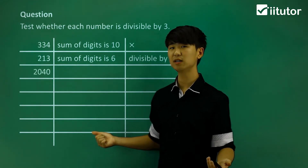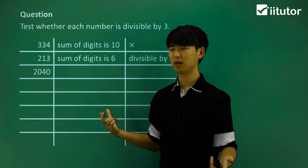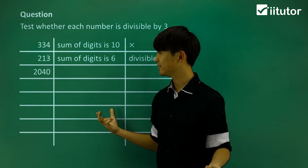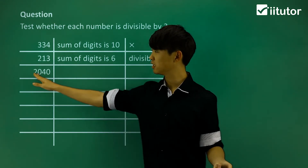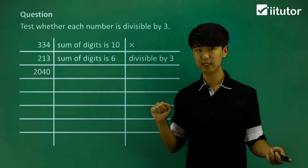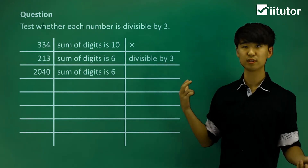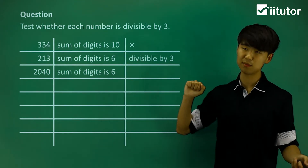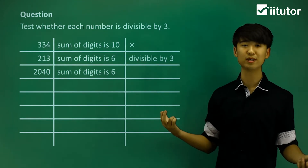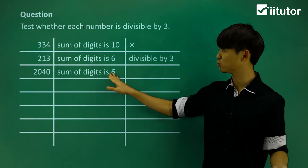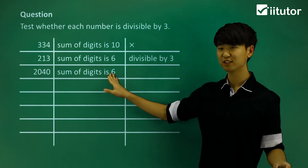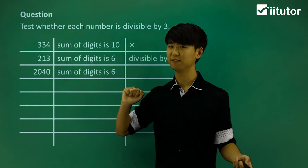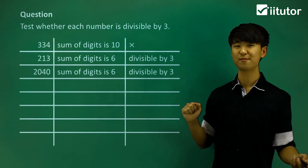Our next number is 2040. The sum of digits — we can see clearly it's going to be 6. And of course, 6 is divisible by 3. So that means this number, 2040, is also divisible by 3.